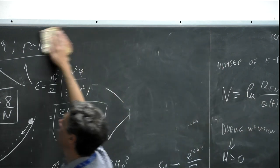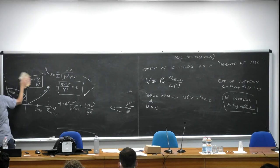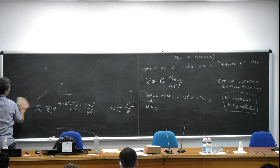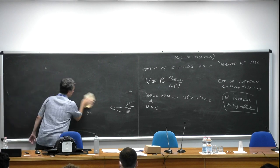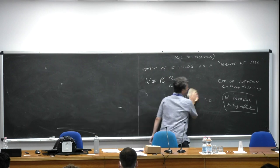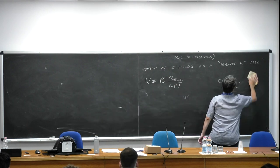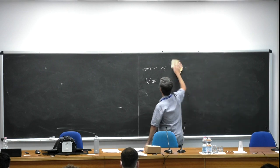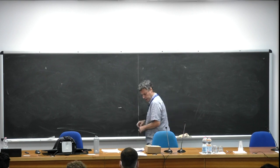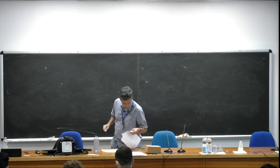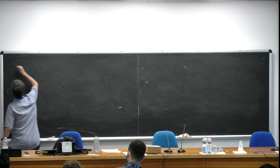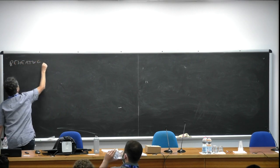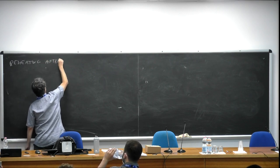We understood that it's very important to know the value of N to do any phenomenology. The question is: which value of N should I choose when I compare with CMB data? To answer this, I need to make a digression and speak about reheating after inflation, because we are going to see these two are very much connected.